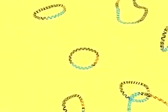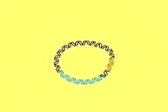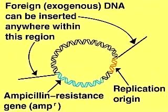Generally, a plasmid vector contains three elements: a cloning site where the foreign DNA fragment can be inserted; a drug resistance gene which destroys antibiotics, in this case ampicillin, to allow selective growth of the host cell; and a replication origin to allow the plasmid to replicate in the host cell.